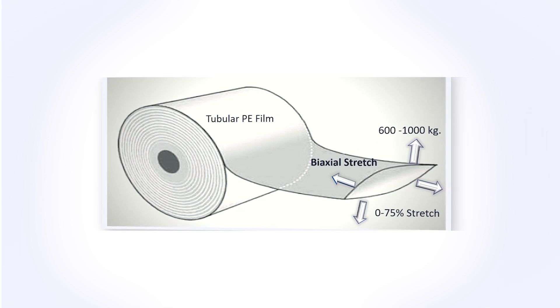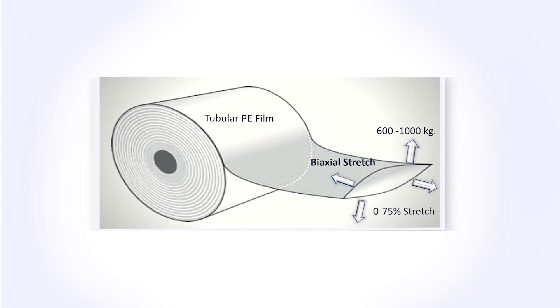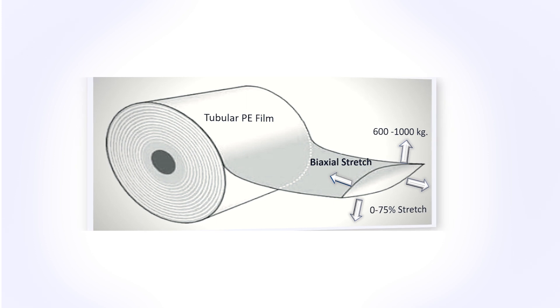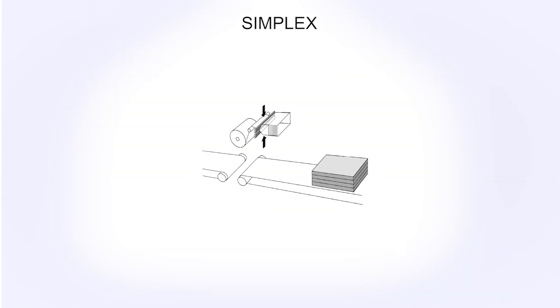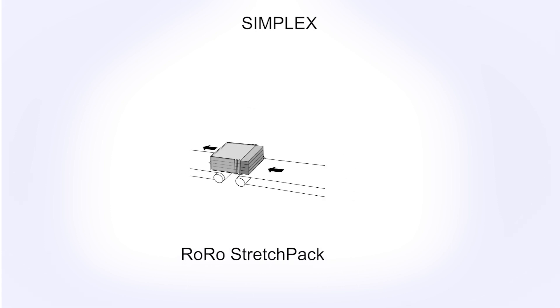The trick here is that we use a flat tubular film with a film circumference smaller than the product, because we can stretch it with up to 75% in two directions we can make it fit the product. This is one of the reasons why our customers benefit from film consumption savings of up to 60%.